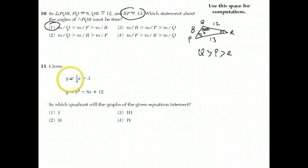Okay, here we have a question. Given that y equals 1 fourth x minus 3, and that y equals x squared minus 8x plus 12, the question says, In which quadrant will the graphs of the given equations intersect? Why don't you click on the screen to pause, and then when you finish, click again.